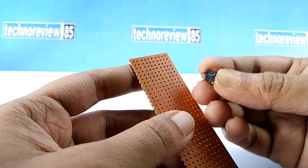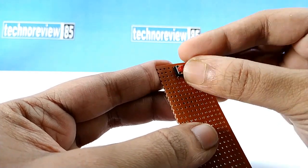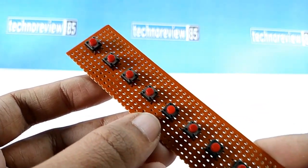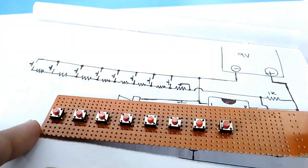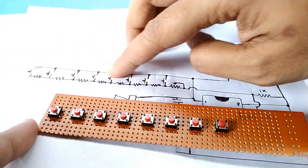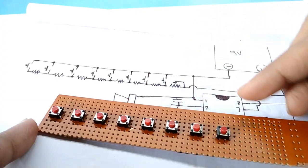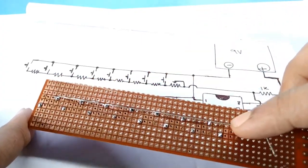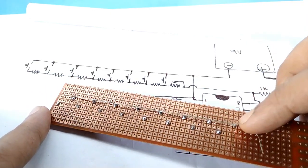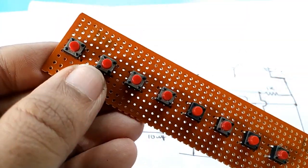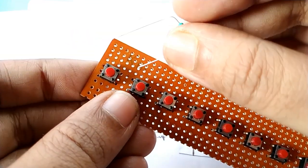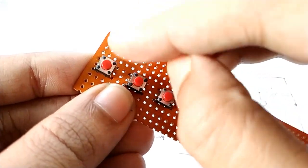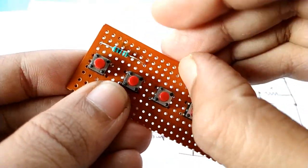Insert micro switch on Veroboard. Now connect one side of all switch pins like the circuit diagram. Connect one key resistor to each switch to another.